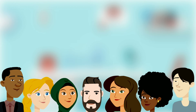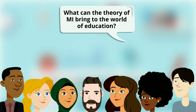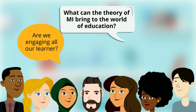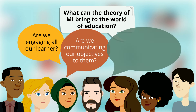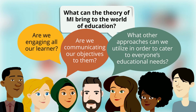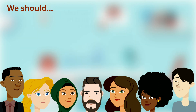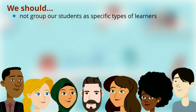Today, an important question to ask ourselves is: what can the theory of multiple intelligences bring to the world of education? As educators, we should be asking ourselves if we are engaging all our learners and if we are communicating our objectives to them. And if not, what other approaches can we utilize in order to cater to everyone's educational needs? We should not make the mistake of grouping our students as specific types of learners for having a specific kind of intelligence, since labeling in this way creates limitations and can restrict our learners' potential.